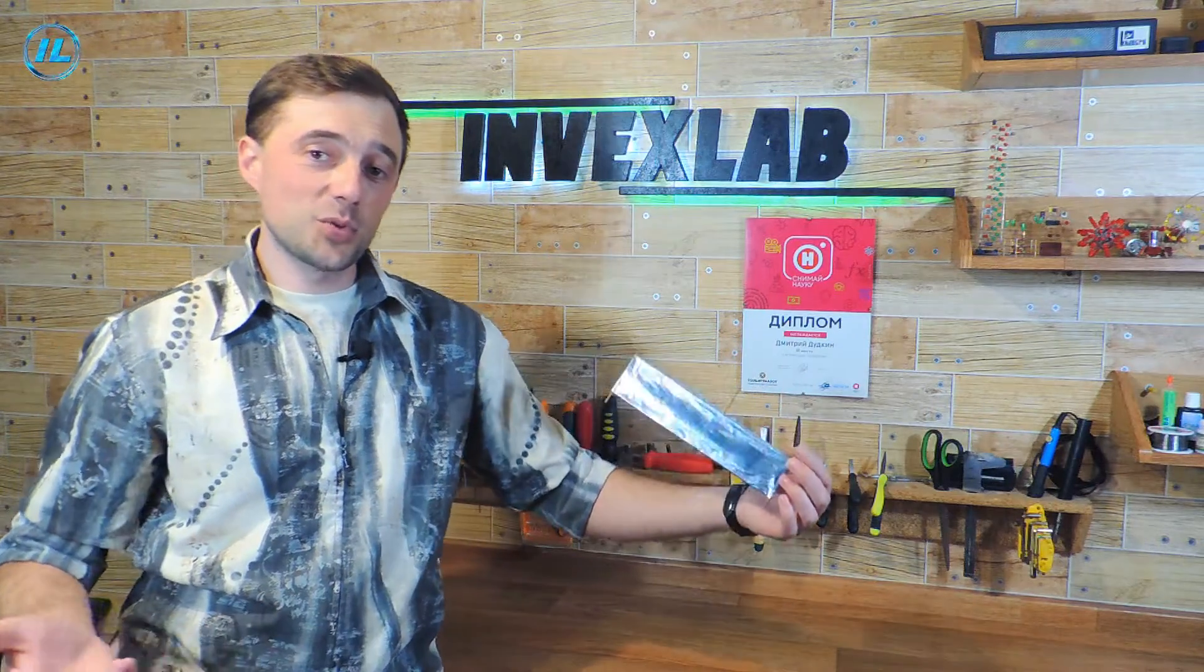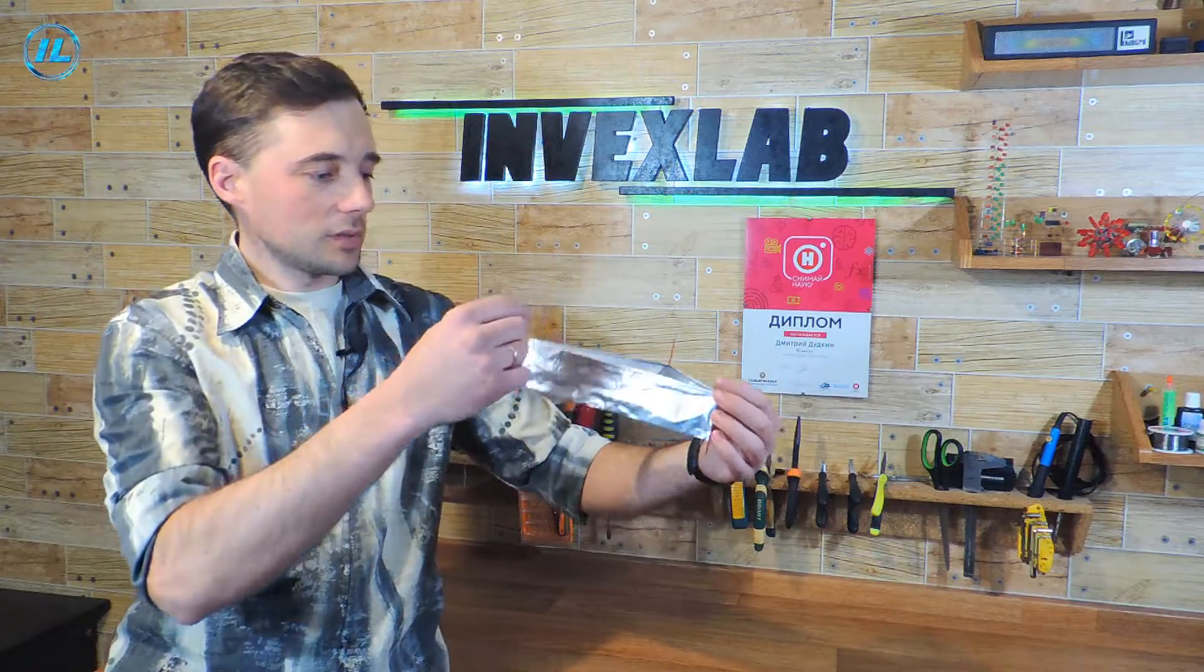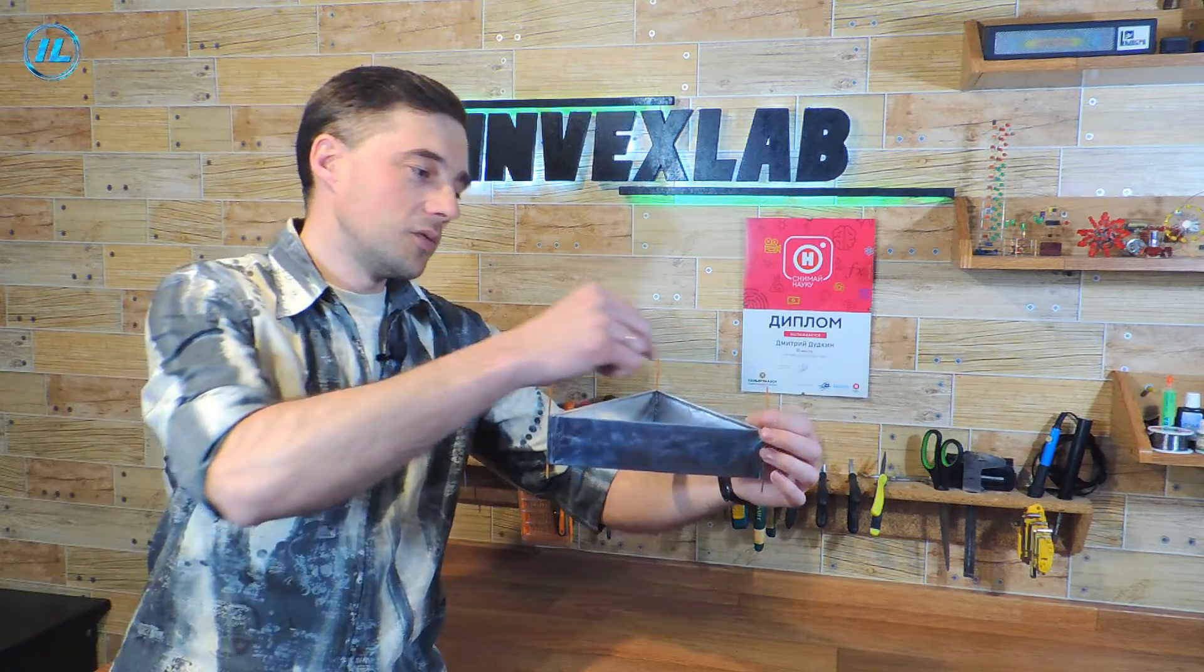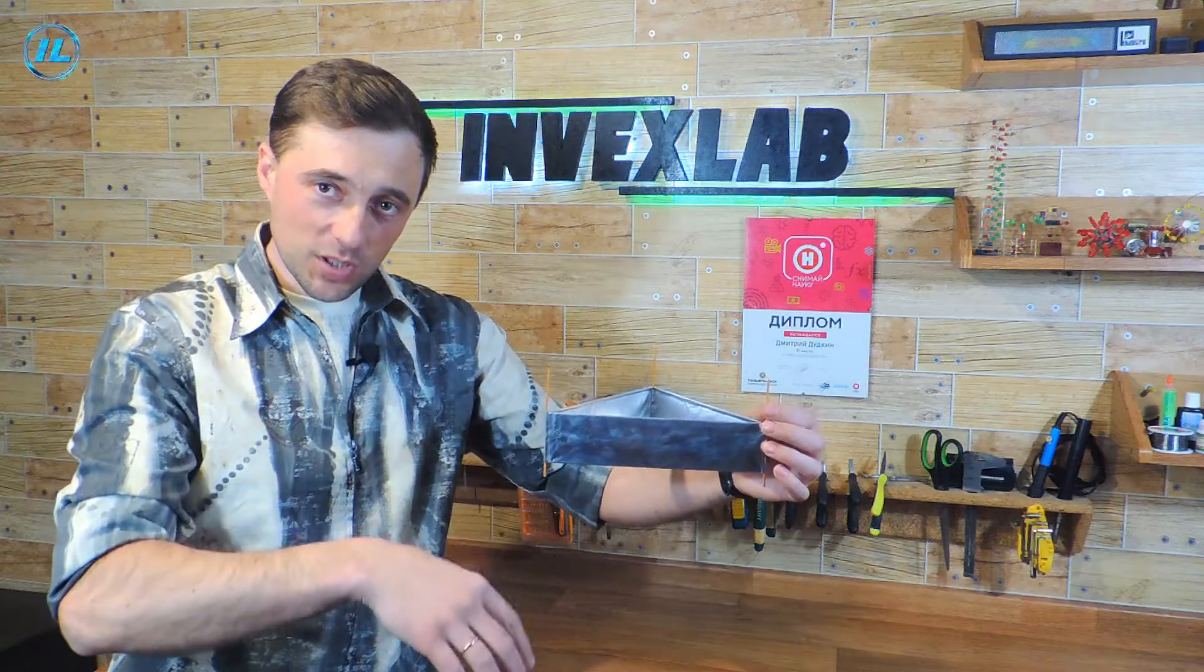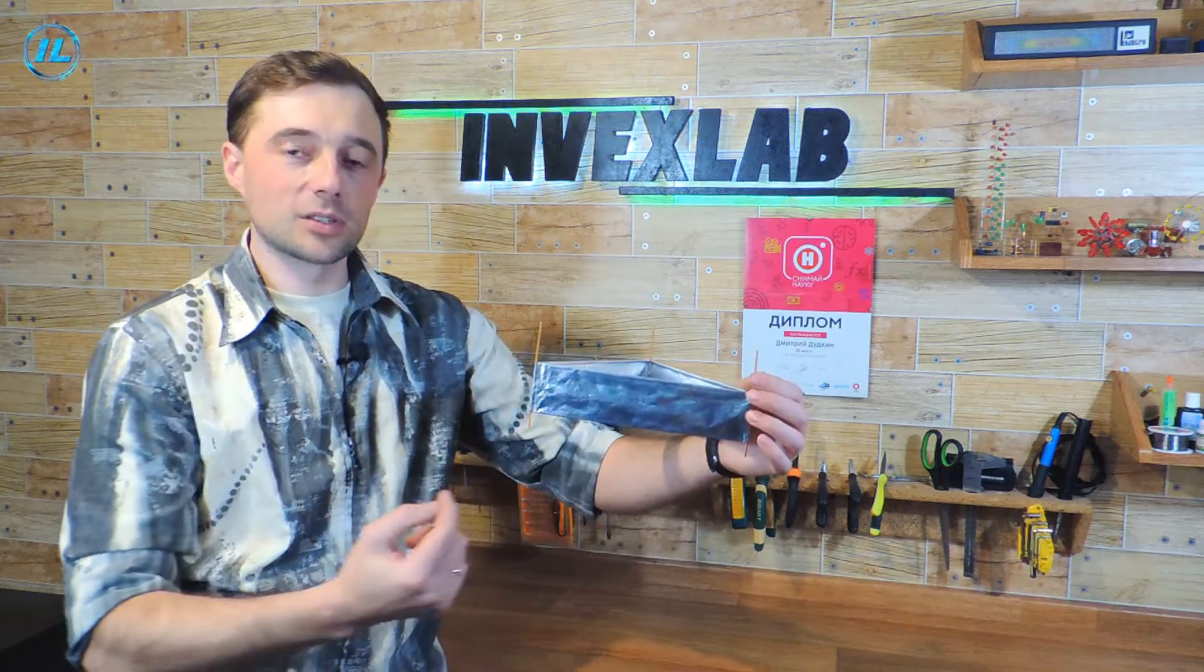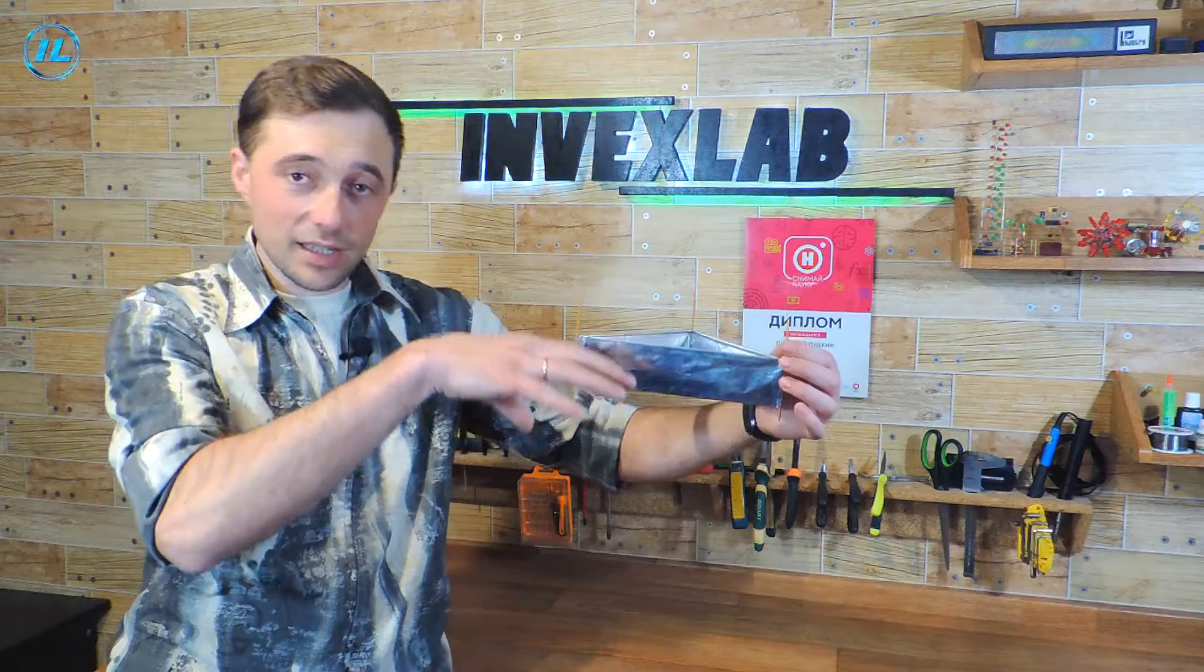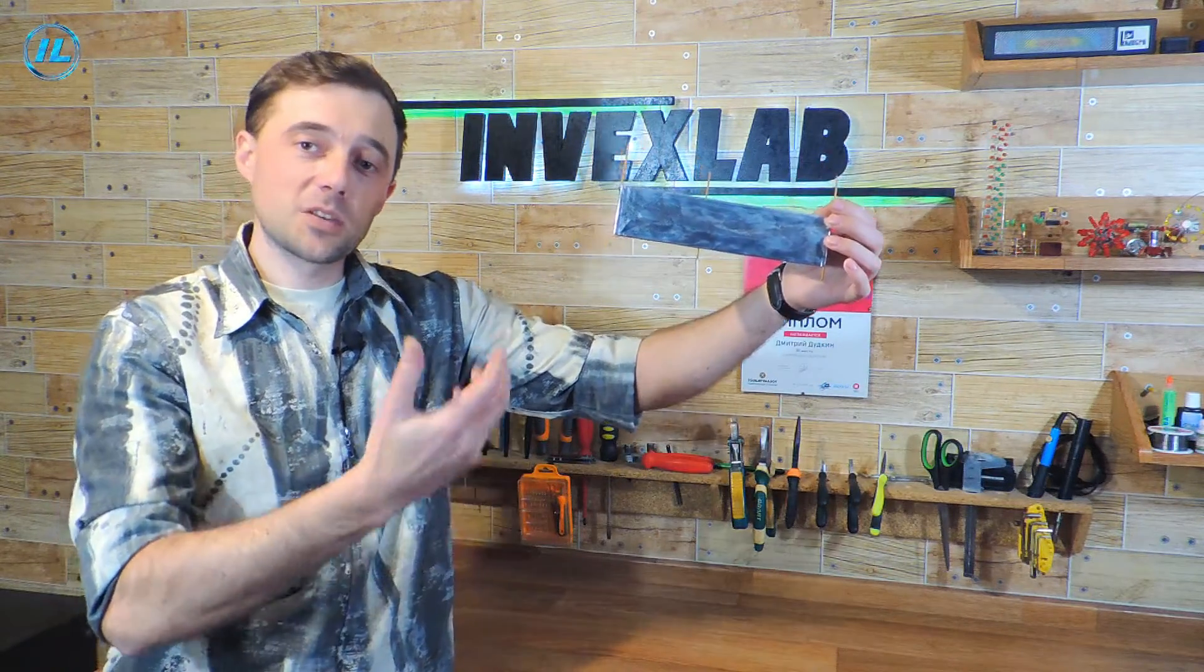The design of the ionic raft is in fact an asymmetric capacitor, where there is an upper electrode and a lower electrode. When a high voltage of 30,000 volts is applied, around the upper electrode the air is ionized and the ions begin to move downwards at high speed towards the lower electrode. At the same time, ions capture air molecules with themselves. Thus, there is a reactive thrust which lifts the ionic raft up.